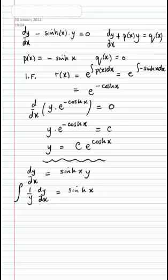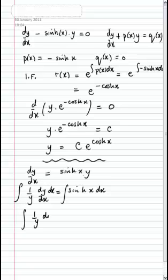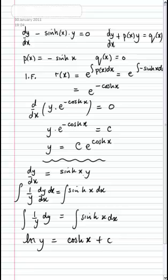Then integrating both sides with respect to x, we'll get that one over y dy is the integral of sinh(x) with respect to x, so that the log of y is the integral of sinh(x), which is cosh(x), plus a constant of integration.